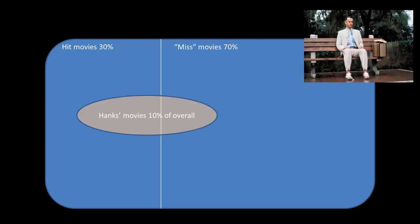The area of the whole region is 1, so the area of the hit movie region is 0.3 — that's the probability that any randomly chosen movie is a hit. Therefore, the probability that any randomly chosen movie is a miss is 0.7. Now suppose we also consider Tom Hanks movies. Let's say Tom Hanks movies represent 10% of all movies — a big exaggeration, but we need to see something on screen. So this oval occupies 10% of the space of the rectangle, and Hanks movies are skewed towards the hit side of the spectrum.